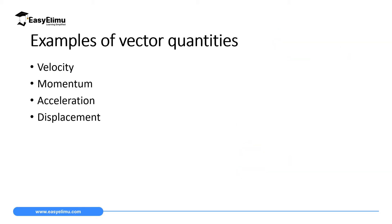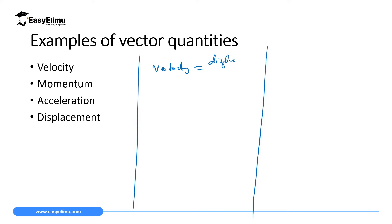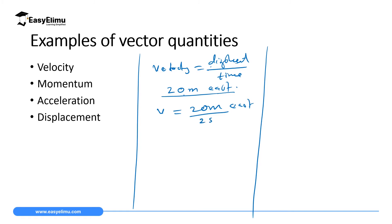Examples of vector quantities include velocity. Velocity is a vector quantity because it is determined by displacement over time taken. Displacement is distance in a specific direction. For example, if a body moves 20 meters east, that is displacement. If it takes 2 seconds, velocity = 20 meters east ÷ 2 seconds = 10 meters per second east. That is velocity — it carries both magnitude and direction.